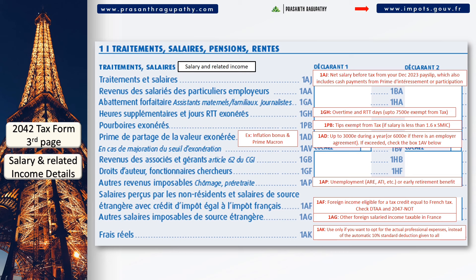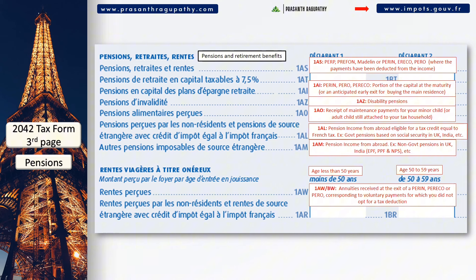Scrolling down on page 3, you will come to the pension and related incomes section. You can declare the income from various government and private pensions. If you received any pensions from outside France, you must declare them in 1L or 1AM as shown on the screen. These must also be declared in the annexure 2047.